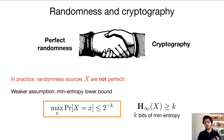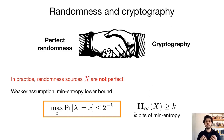For example, if we're dealing with n-bit strings, then if k equals n, this means we're working only with the uniform distribution. But if k is much smaller than n, then this is a much more relaxed assumption on the structure of the source.